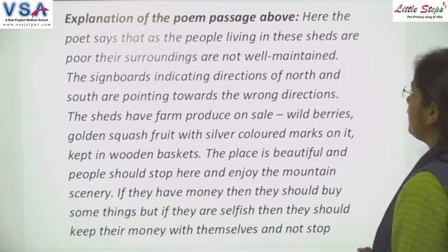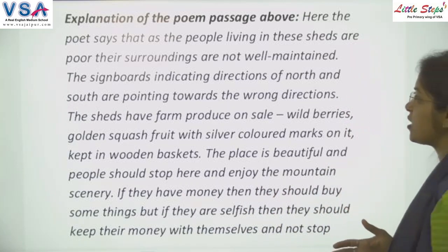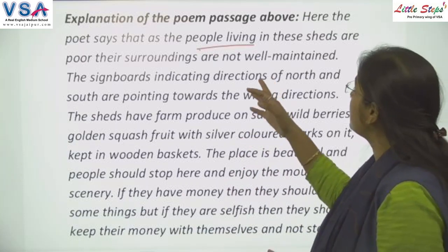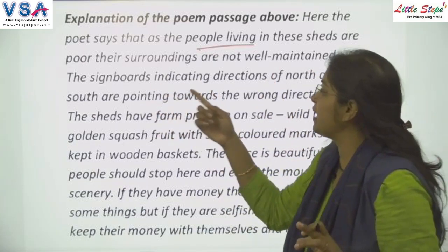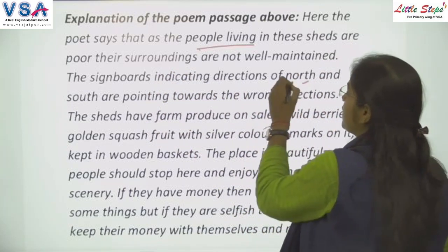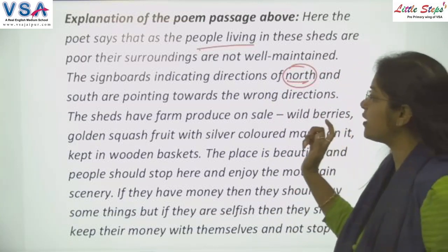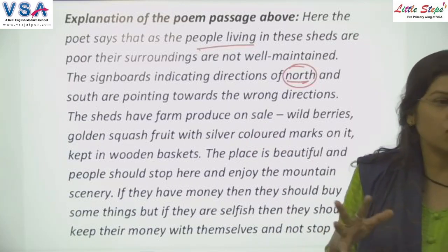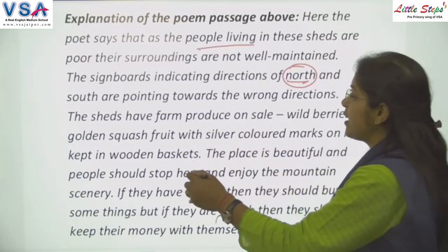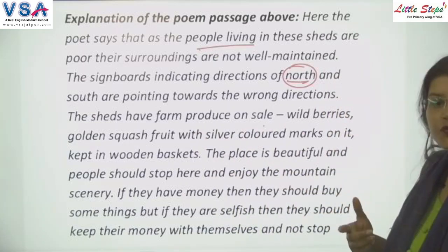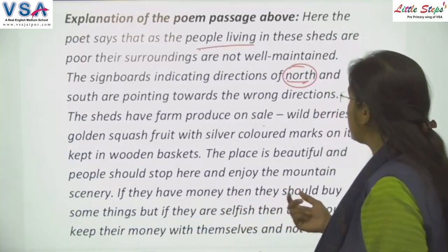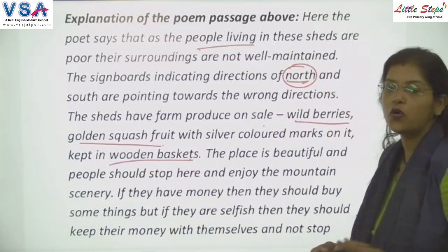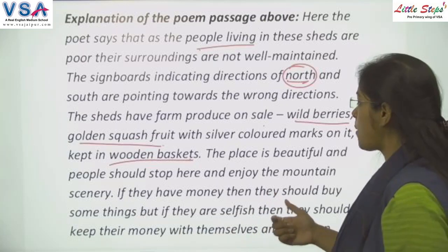The poet says that as the people living in these sheds are poor, their surroundings are not well maintained. Even the signboards indicating directions are not correct — the north direction shows south, and the south shows north, meaning everything is so poorly maintained that directions are wrong. The sheds have farm produce on sale: wild berries, golden squash fruit with silver-colored marks on it, and wooden baskets. The place is beautiful and people should stop here and enjoy the mountain scenery.